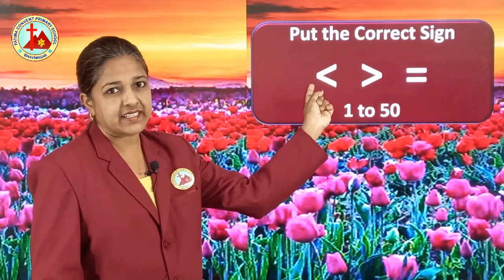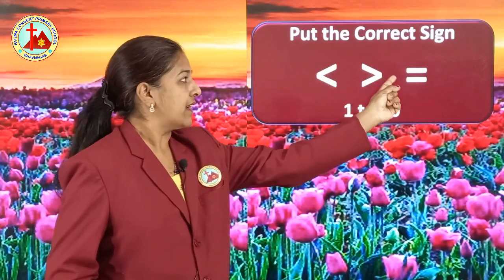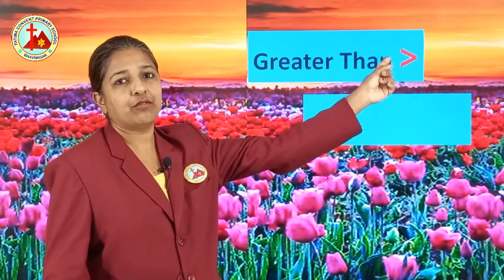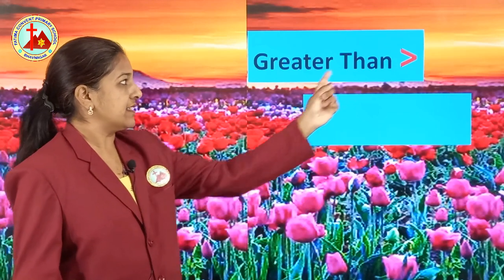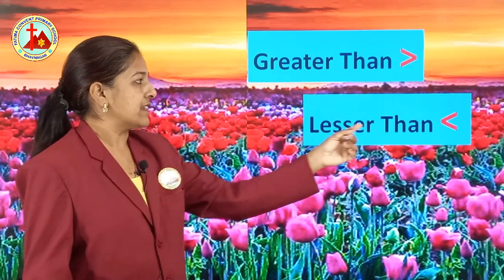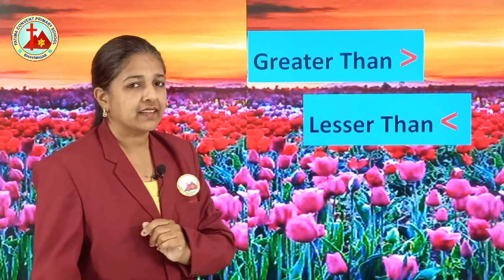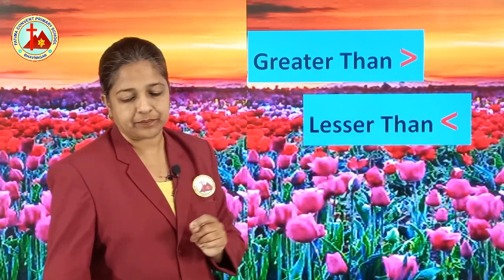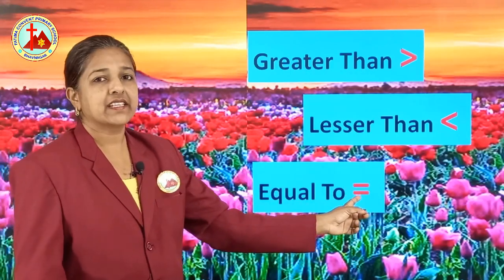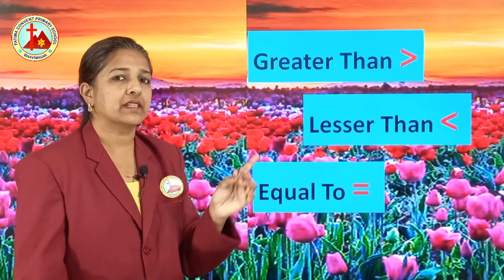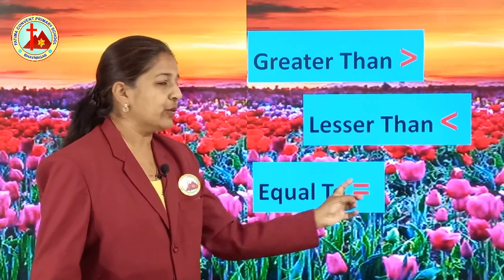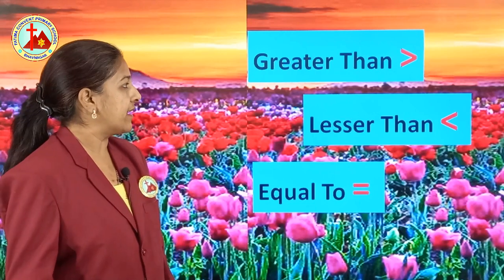This is the lesser than sign, this is the greater than sign, and this is the equal to sign. Let's move ahead and learn our today's topic. First, this is the sign of greater than. This sign is of greater than. Next, this is the sign of lesser than. When the number is lesser than the other number, you have to put this sign. Next, this sign is equal to. When both the sides numbers are equal, then you have to put this sign. Let's move ahead and learn our today's topic.